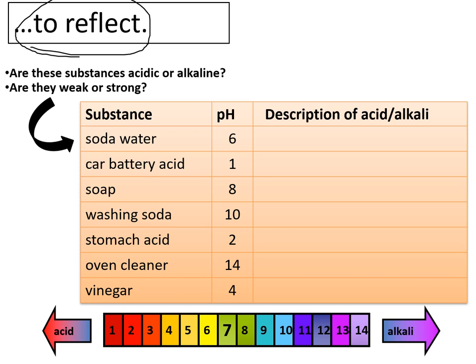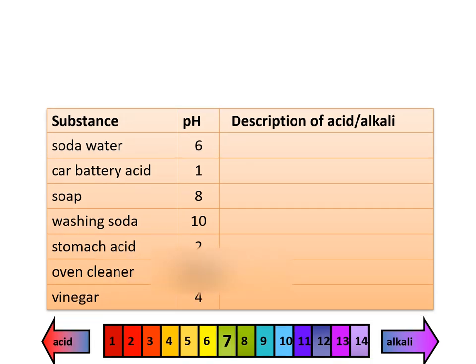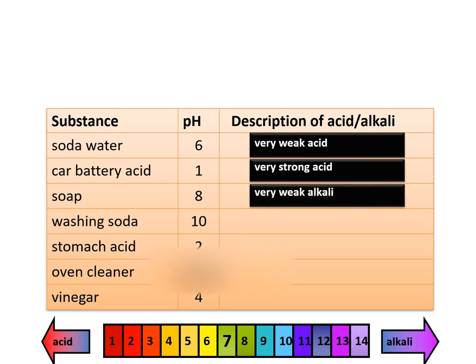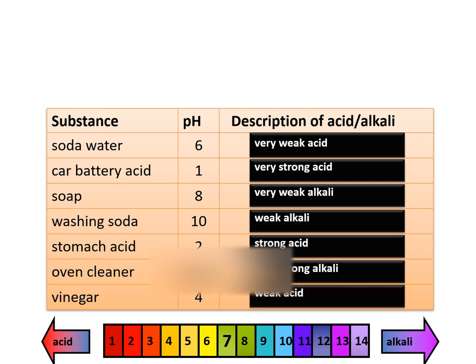Let's do a reflection — take a minute break, pause the video. Write down whether these substances are acidic or alkaline and whether they are weak or strong. Soda water is a very weak acid — pH 6. Battery acid is a very strong acid. Soap is a very weak alkali. Hopefully you got those right.